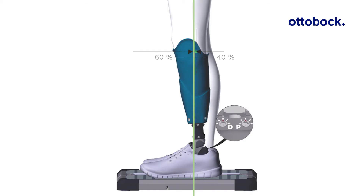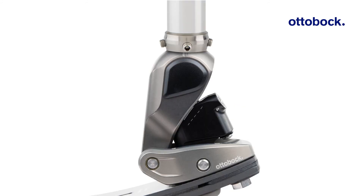The load line should run on or close to the alignment marking on the ankle. Be aware that in a balanced ankle position, the load line can be closer to the knee center than the standard 3D laser posture recommendation values for transtibial and transfemoral prostheses. This is due to the special teleo adapt kinematics.